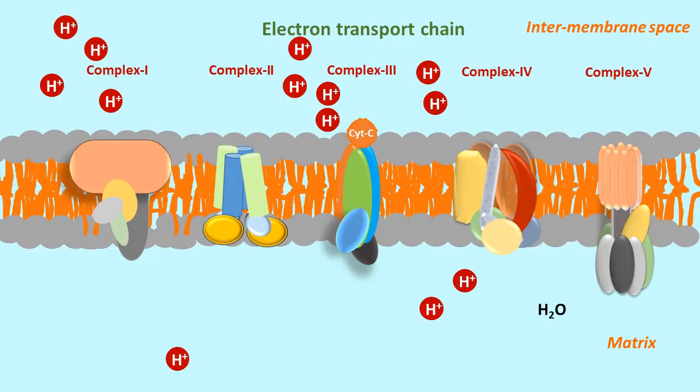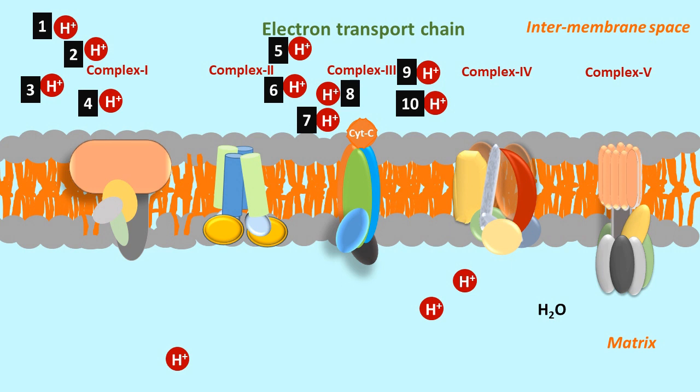First 4 protons are pumped at complex 1, then another 4 at complex 3, and last 2 protons are pumped at complex 4. Thus, from one molecule of NADH, the electron transport chain pumps a total of 10 protons into the intermembrane periplasmic space.